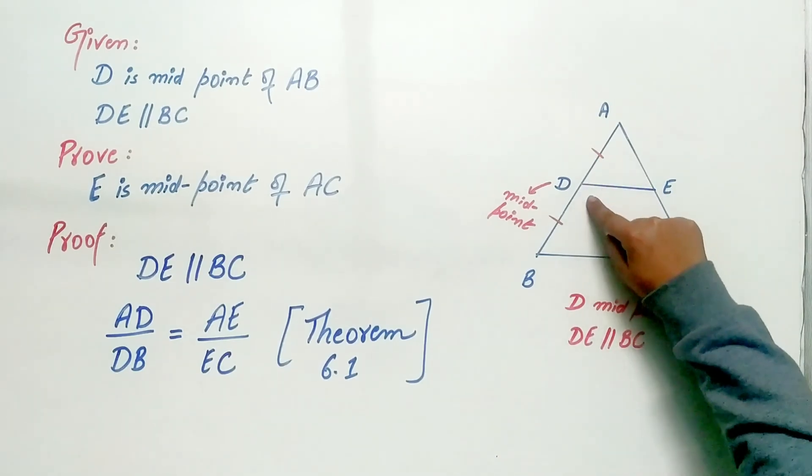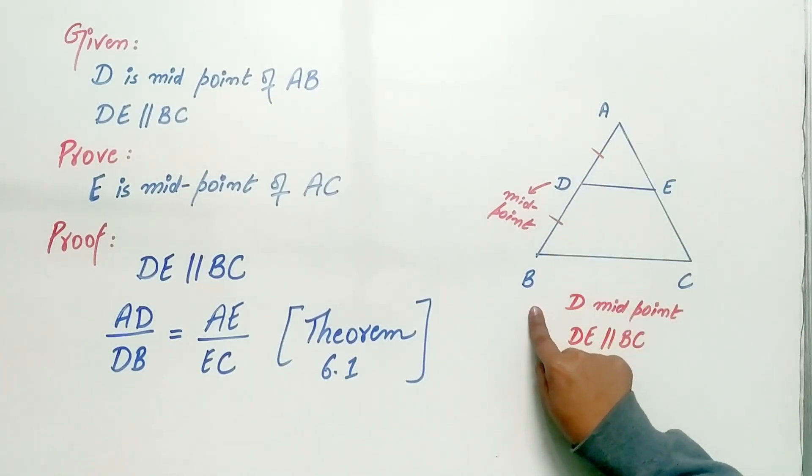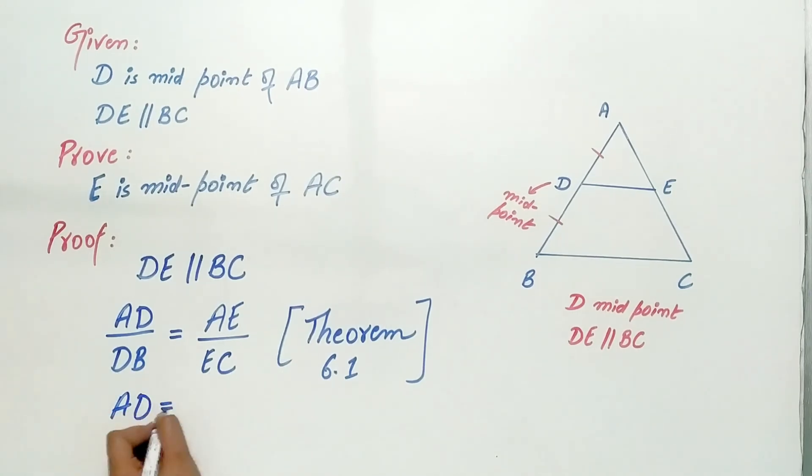Now, we know D is the midpoint of AB. That is, AD is equal to DB. Why? D is the midpoint.